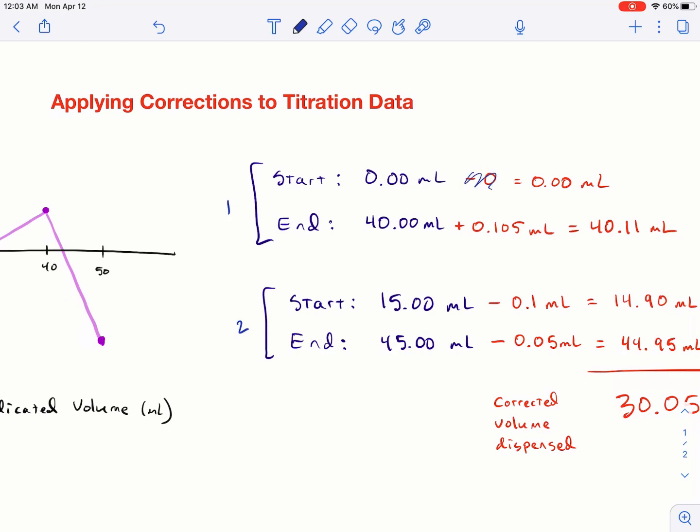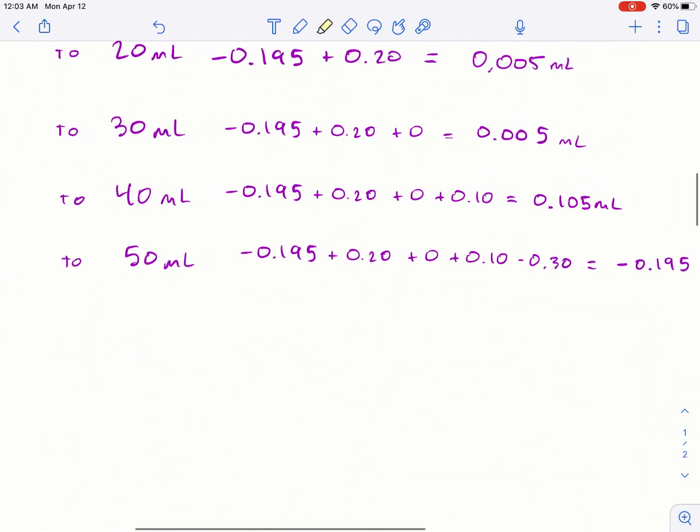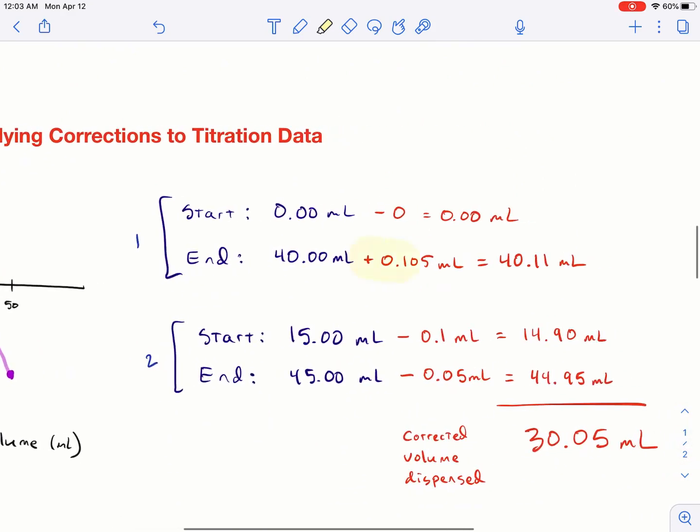Zero doesn't really have an adjustment, so whatever, so you're still at zero. And then 40 milliliters does have an adjustment. You can pull it off the chart or you can use your data up here. 40 milliliters, my cumulative adjustment is 0.105. It's positive, you add 0.105 to it. And then here's your final volume. And then for this titration, when you want to find the amount dispensed, it's just 40.11 minus zero. So this would be your amount dispensed. That's the calibrated answer.